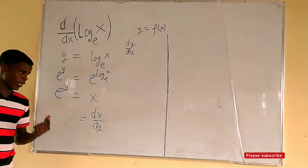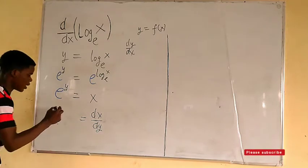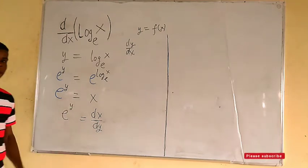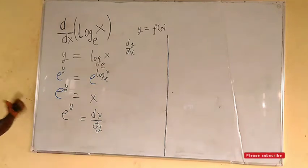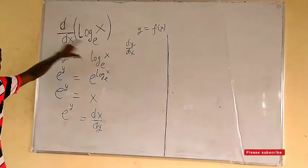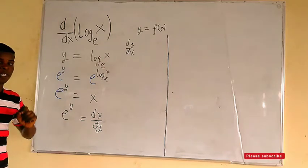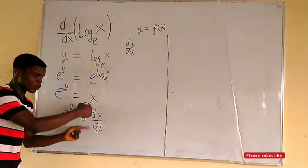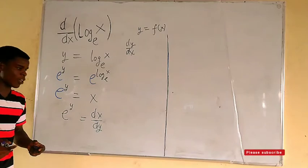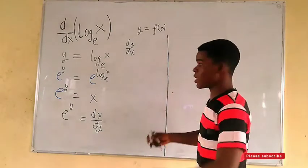The derivative of e to the power y with respect to y remains the same — it is still e to the power y. Now, since we want dy/dx (the derivative of y with respect to x, the independent variable), we take the reciprocal on both sides.